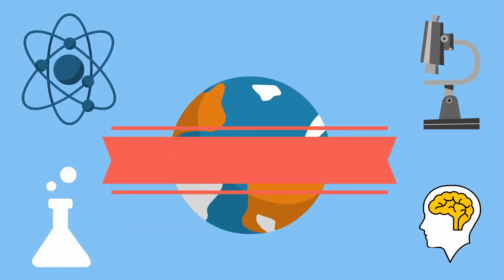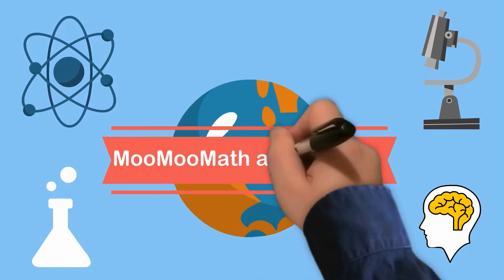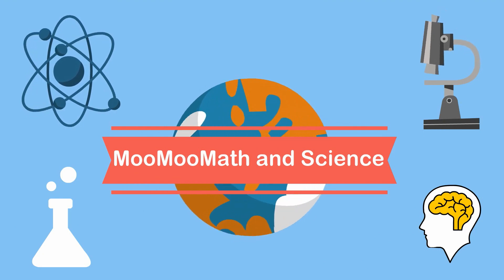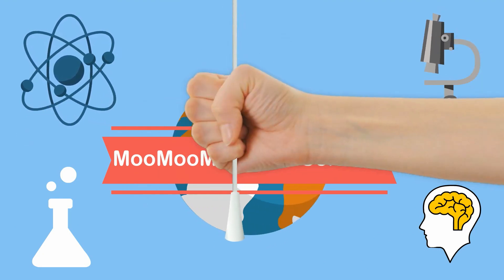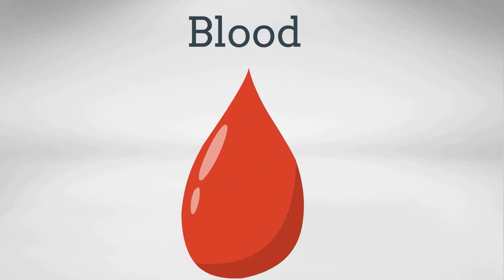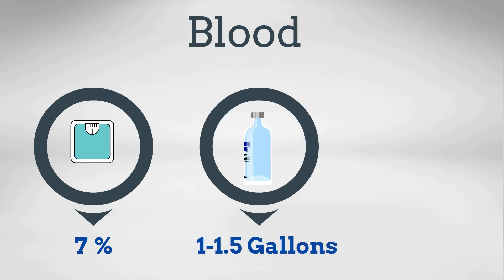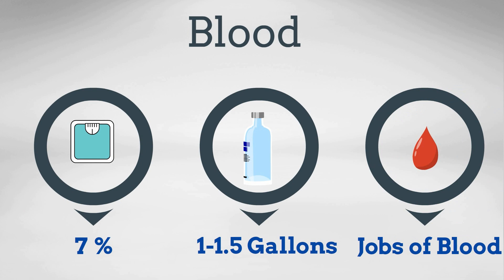Welcome to Moomoo Math and Science. In this video I would like to talk about the components of your blood. Our blood helps keep us alive. Your blood makes up around 7% of your body weight, which means you have between 1 and 1.5 gallons of blood. It has many important functions.